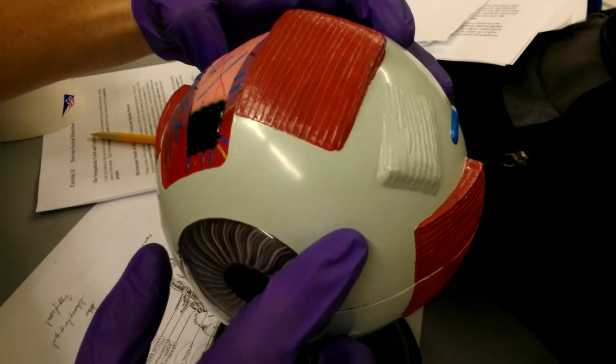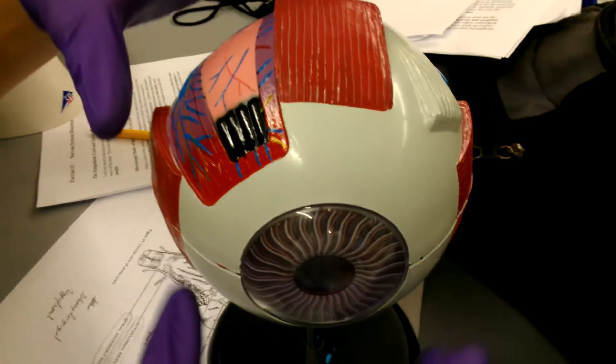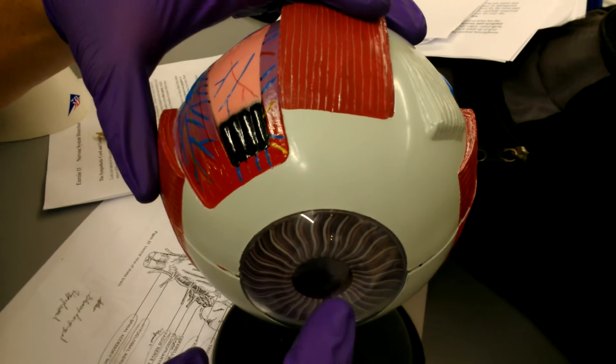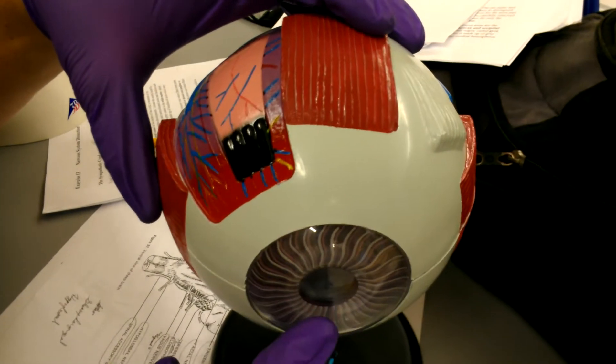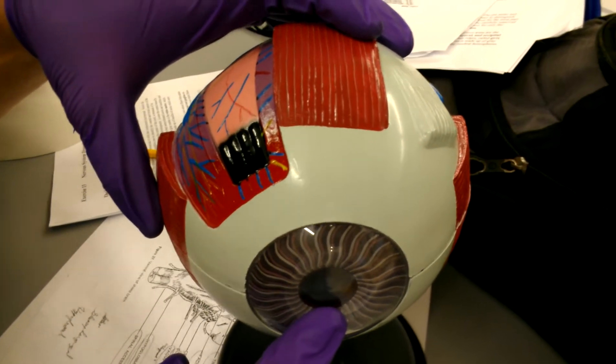Eye. This white part here is all the sclera. The clear part right here is the cornea.